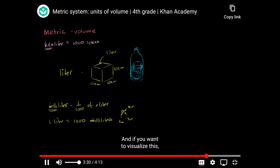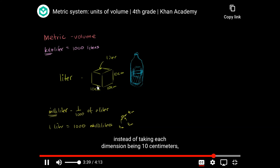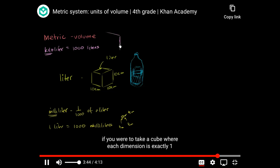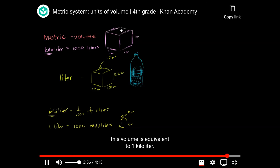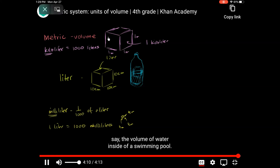If you want to visualize a kiloliter, this actually isn't as large as you might assume it to be. If you take a cube where each dimension is exactly 1 meter — 1 meter deep, 1 meter wide, and 1 meter tall — this volume is equivalent to 1 kiloliter. So a kiloliter would be very useful for measuring, say, the volume of water inside of a swimming pool.